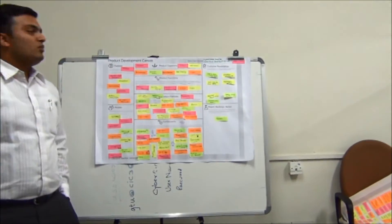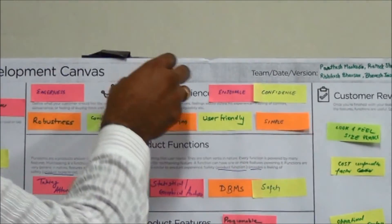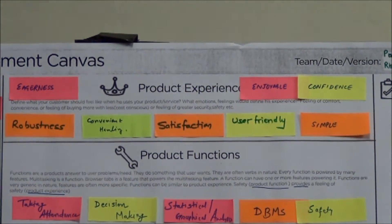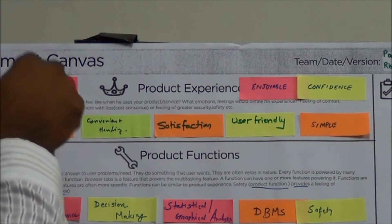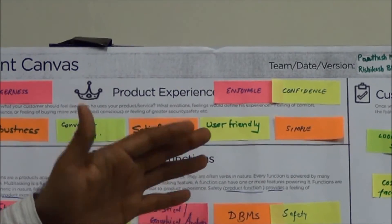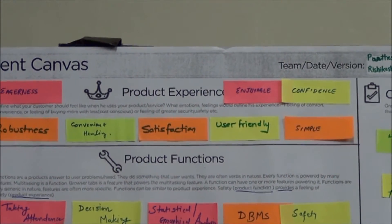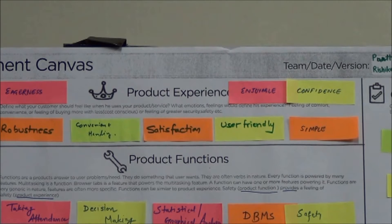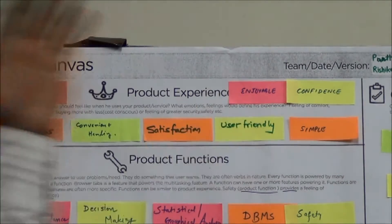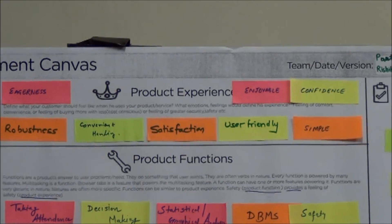The third caption is product experience. In this section, we write down what will be the feelings once the user uses your product. If you are designing a fruitful product for attendance purposes, you should have robustness, convenient handling, and at the end, satisfaction from having a robust database. It should be user-friendly, simple, confident, and enjoyable — the user should have eagerness to use our product.